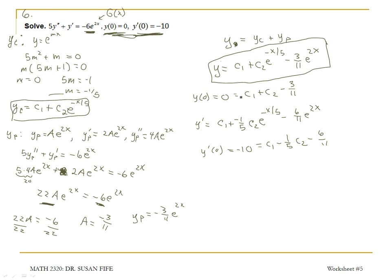Let me line up these equations. I'm going to bring this y of 0 down. I've got 0 equals c1 plus c2 minus 3 elevenths. I'm going to multiply the second equation by negative so that the c1's drop out. That's going to give me negative 10 is equal to, the c1's drop, this is negative 1 fifth c2. This would be negative 5 fifths c2, so I get negative 6 fifths c2. Negative 6 elevenths and 3 elevenths gives me negative 3 elevenths.